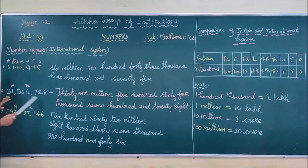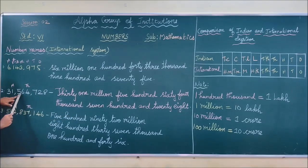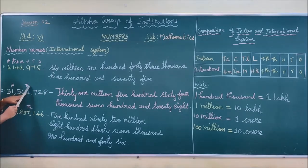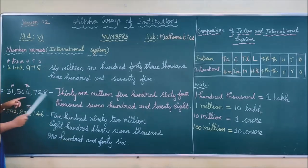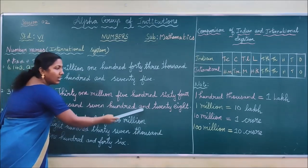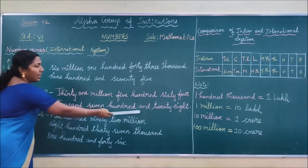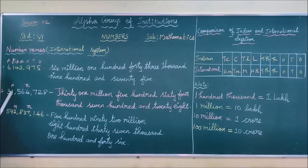31 million. Don't use 'and' here. Then 564 thousand. And then 728. You have to use the conjunction 'and' in the period of ones only — not for thousands, millions, or ten millions. That is the rule in both Indian and international systems.